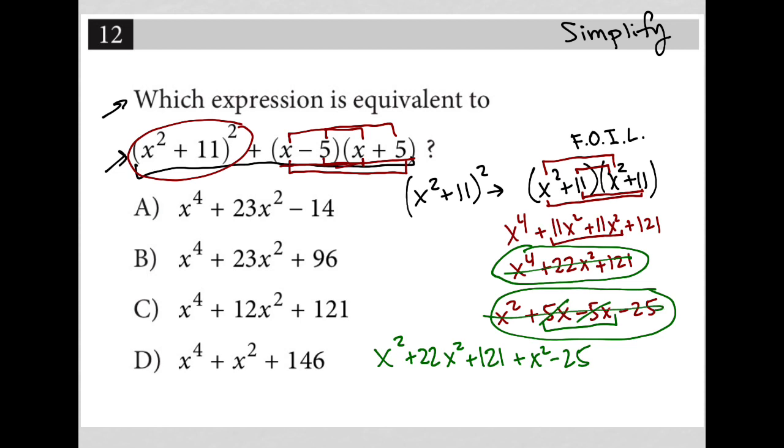Now in terms of combining like terms, oh, I wrote x squared, but this was actually x to the fourth. This was not x squared. My apologies.